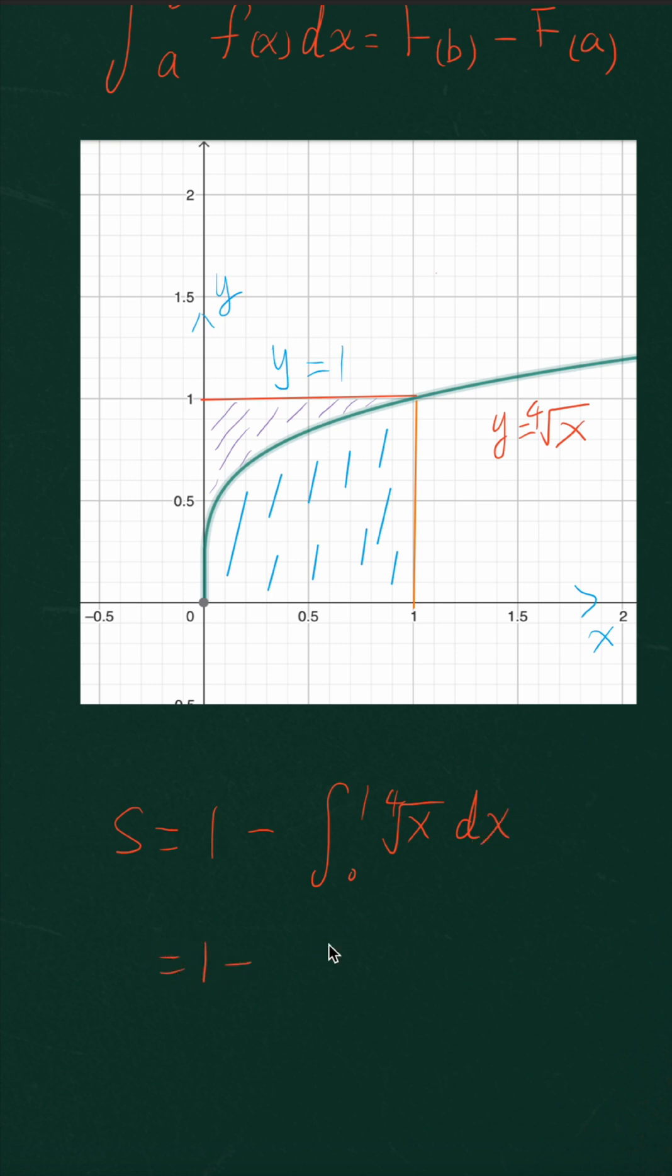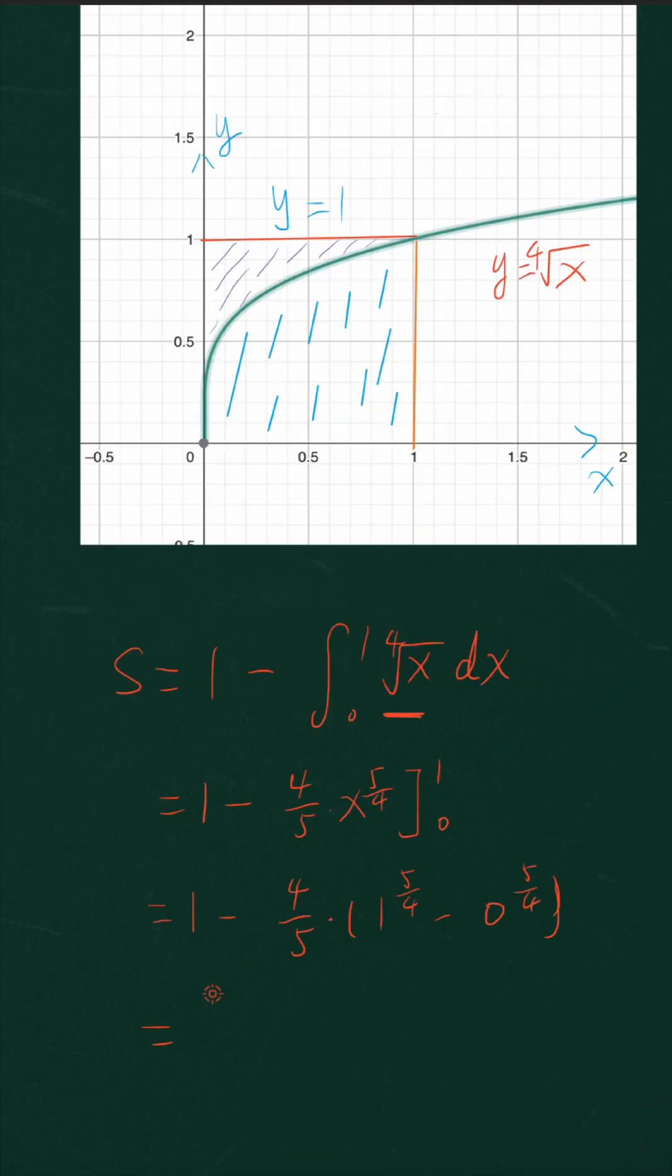So 1 minus the anti-derivative of this function, which is actually 4 over 5 times x raised to the power of 5 over 4, which equals 1 over 5. That's the area that we are finding.